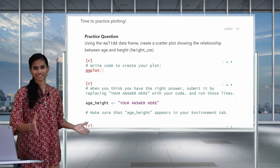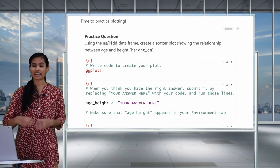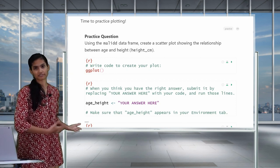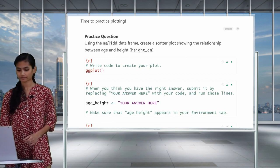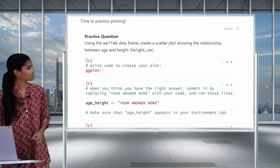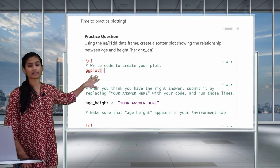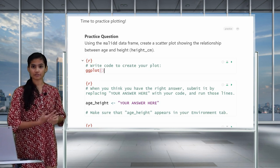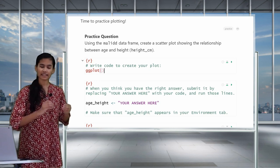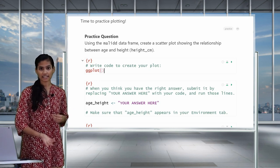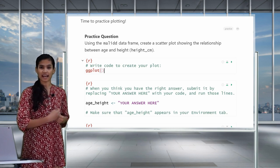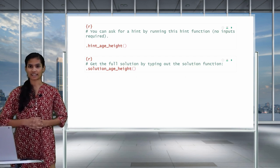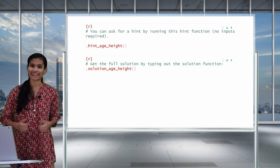This tells us that perhaps viral load decreases with age. Later on, when we look at it more closely and add a trend line, we'll get further insights into this plot. But this is the base plot that we'll be adapting throughout the lesson. Now, it's your turn to do a practice question. We'd like you to use the Mali DD data frame to create a scatterplot of age versus height — age on the x-axis and height on the y-axis. Please pause the video now and work on the practice question in your RMD.